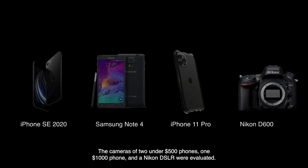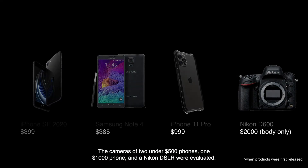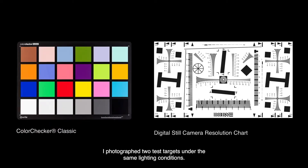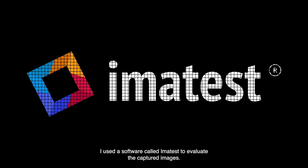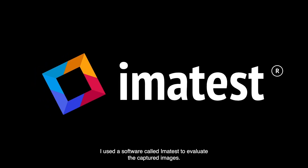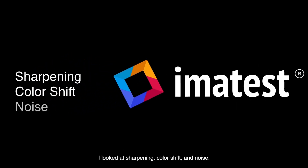The cameras of two under-$500 phones, one $1,000 phone, and a Nikon DSLR were evaluated. I photographed two test targets under the same lighting conditions and used a software called Imatest to evaluate the captured images. I looked at sharpening, color shift, and noise.